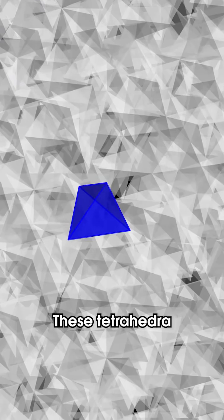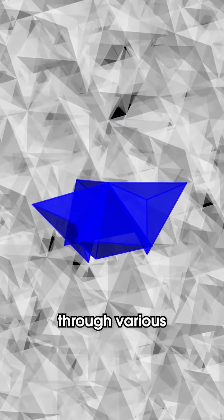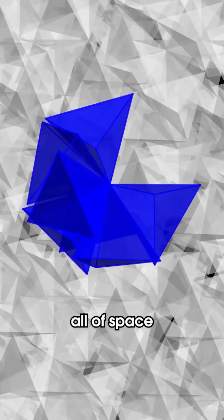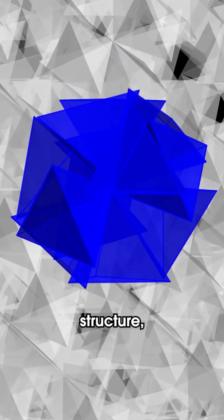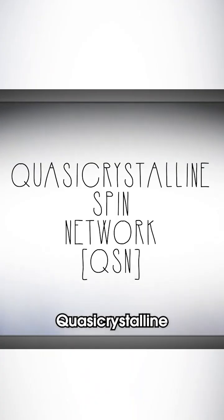These tetrahedra combine with one another through various mathematical rules throughout all of space into a massive structure Klee calls the quasicrystalline spin network.